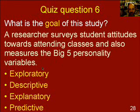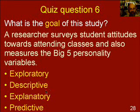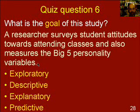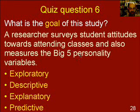Quiz question six: what is the goal of this study? A researcher surveys student attitudes towards attending classes and also measures the big five personality variables. The implication here is that the researcher wants to look for a relationship between personality and attitudes towards attending classes — probably in the realm of explanatory research, using personality to explain class attendance. If there was more information, this could become a predictive study — for example, if the researcher's motivation was to reduce student attrition by advising students on how to handle university study based on their personality characteristics, that would be in the realm of predictive goals.